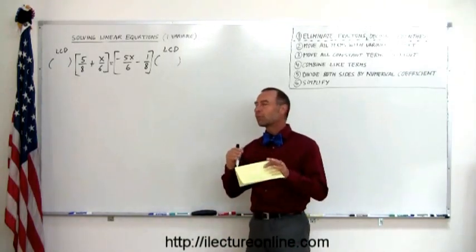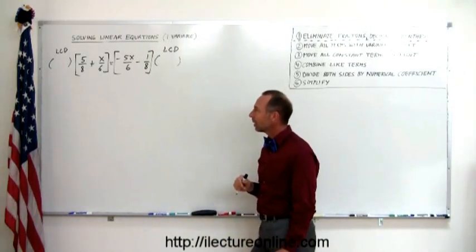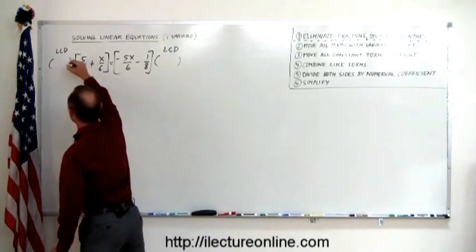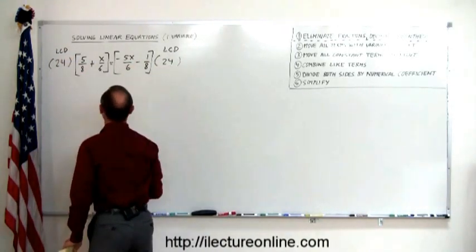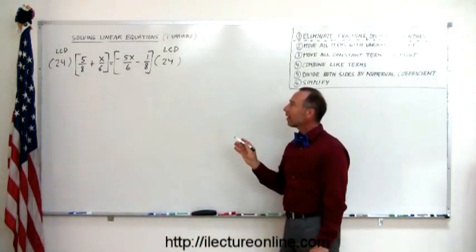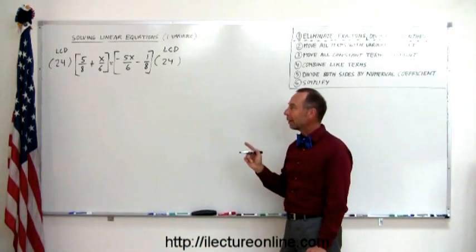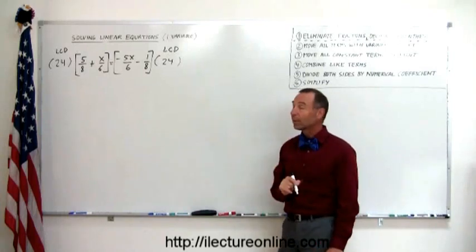In another lecture, we'll go through a much more systematic way of finding the lowest common denominator. But for now, it's simply good enough to say 24 works. So I'm going to multiply both sides of the equation by 24, and that will get rid of my denominators. And you'll see in just a moment how.